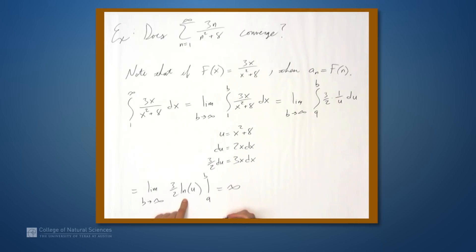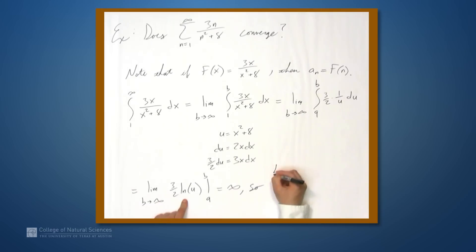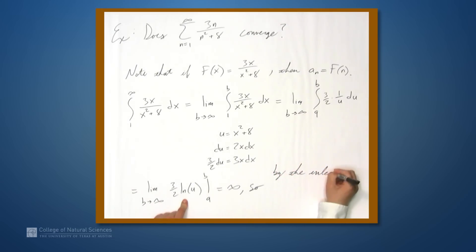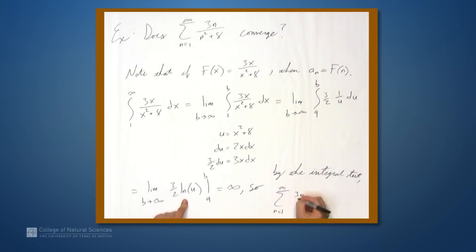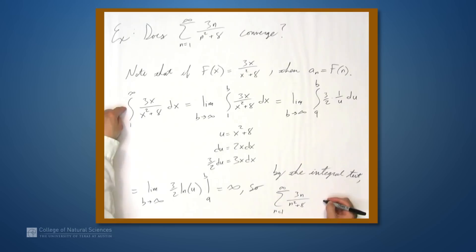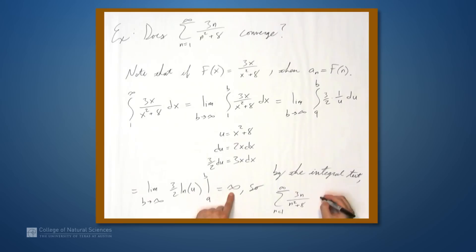So the improper integral is infinite — meaning it diverges — so by the integral test, the series from n equals 1 to infinity of 3n over n squared plus 8 diverges.